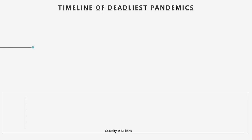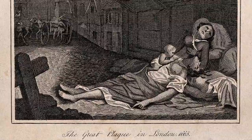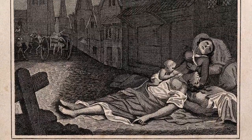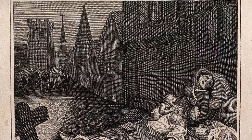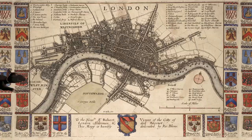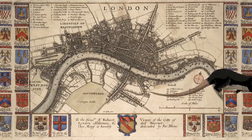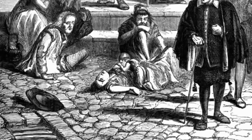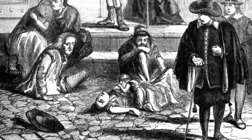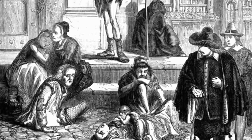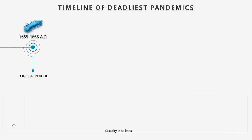At number 15: The Great Plague of London. It was the last major epidemic of the bubonic plague to occur in England, happening within the centuries-long second pandemic — an extended period of intermittent bubonic plague epidemics which originated in China in 1331 and lasted until 1750. It was caused by Yersinia pestis bacterium, usually transmitted through the bite of an infected rat flea. The Great Plague killed about 100,000 people in London.